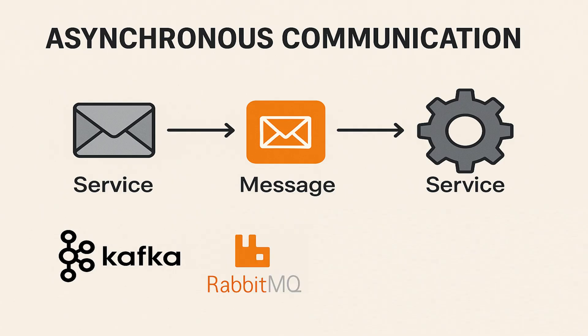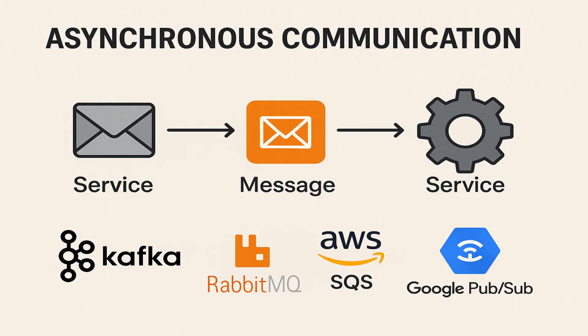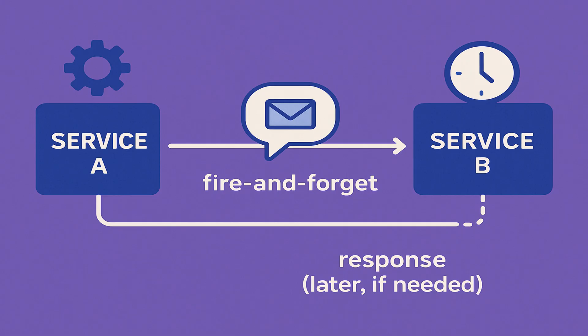On cloud providers, we also have AWS SQS or Google Pub/Sub. These tools help services send messages reliably and let the receiver process them whenever it's ready. Service A sends a message and immediately continues its work. Service B receives the message, processes it on its own time, and can send the response back later if needed.